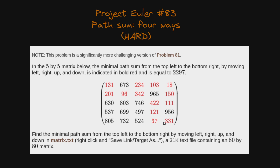The minimum sum among all possible paths is given as 2427. Using similar steps, we need to find the minimal path sum from the top-left to the bottom-right by moving left, right, up, and down in a matrix. This is different from the given one - that was just a sample. The actual problem is an 80 by 80 matrix and we need to find the minimum path sum from top-left to bottom-right following four-directional movements.